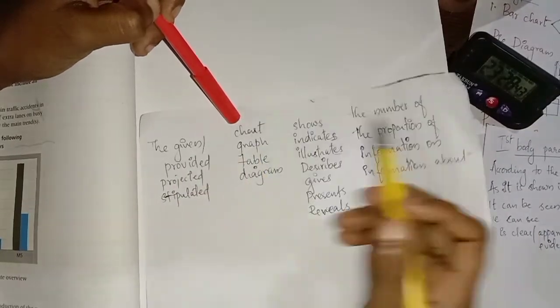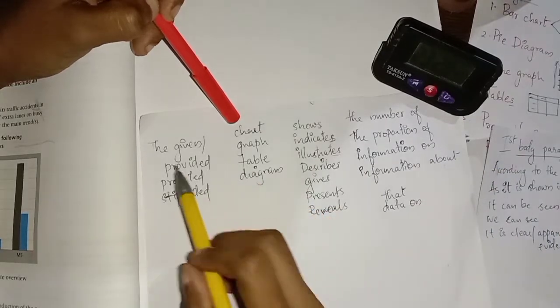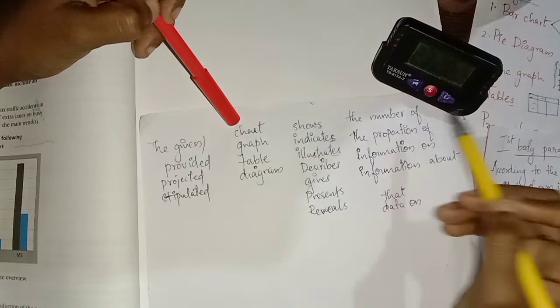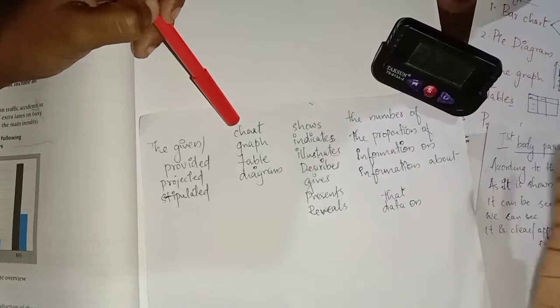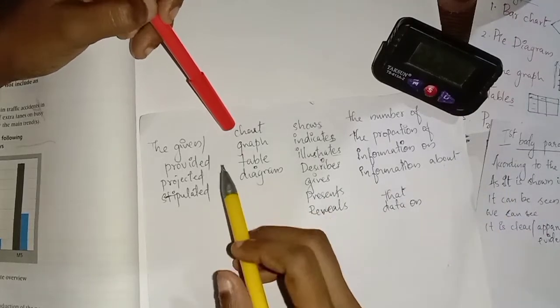If you can remember this, that's well and good. The given chart shows the number of people, or the number of males and females, or whatever it is. You need to continue that, or the given...